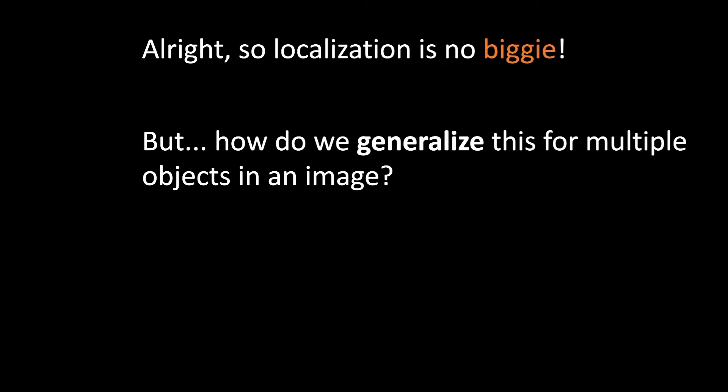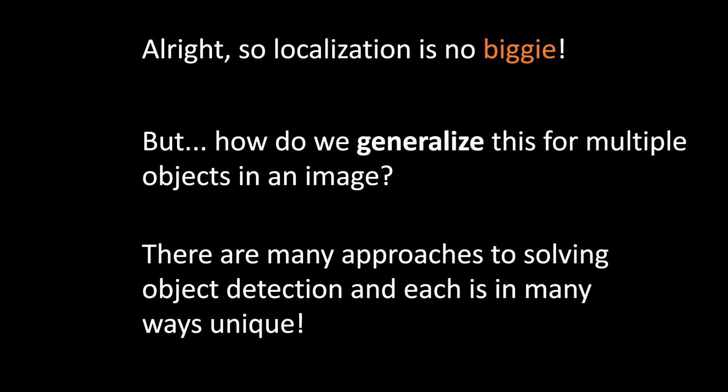So localization itself is not a huge problem, but the challenge is: how do we generalize this for multiple objects in an image? We can have arbitrarily many objects, so we can't use a fixed number of output nodes. There are many different approaches to solving object detection, each unique in their own way. Let's take a look at some of the most common ones.